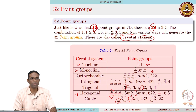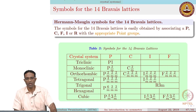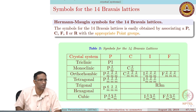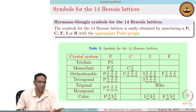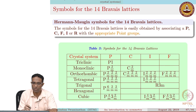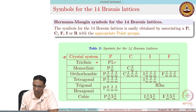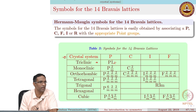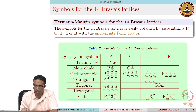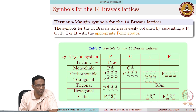These are the various point groups present in three dimensions. We can also talk about the Hermann-Mauguin symbols for all the Bravais lattices. For the triclinic crystal system, you have P 1-bar, which is the space group to which the triclinic Bravais lattice belongs, as there are no other symmetry elements present. For monoclinic, you can have P and C — that is a primitive one with only one lattice point at all corners, and then a centered unit cell.